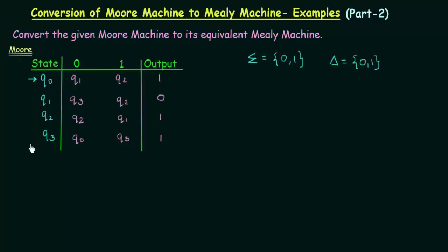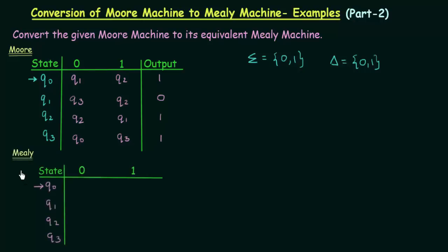First let's try to draw the transition table for the Mealy machine using this transition table of the Moore machine. Here we have the transition table for our Mealy machine. Just like the Moore machine, we have 4 states Q0, Q1, Q2, and Q3, and Q0 is the starting state. As this is the Mealy machine, the outputs which were given here should be associated to the transition now, and not to the state as it was for the Moore machine. Let's try to associate the outputs to the transitions and fill up this Mealy machine's transition table.